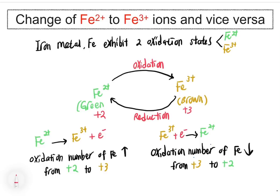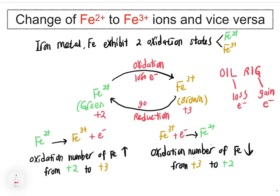In terms of electrons, oxidation involves loss of electron — you can remember this from the word OIL: Oxidation Is Loss, while Reduction Is Gain of electron. In the half equation, Fe2+ is oxidized into Fe3+ by losing an electron, and Fe3+ is reduced into Fe2+ by gaining an electron.